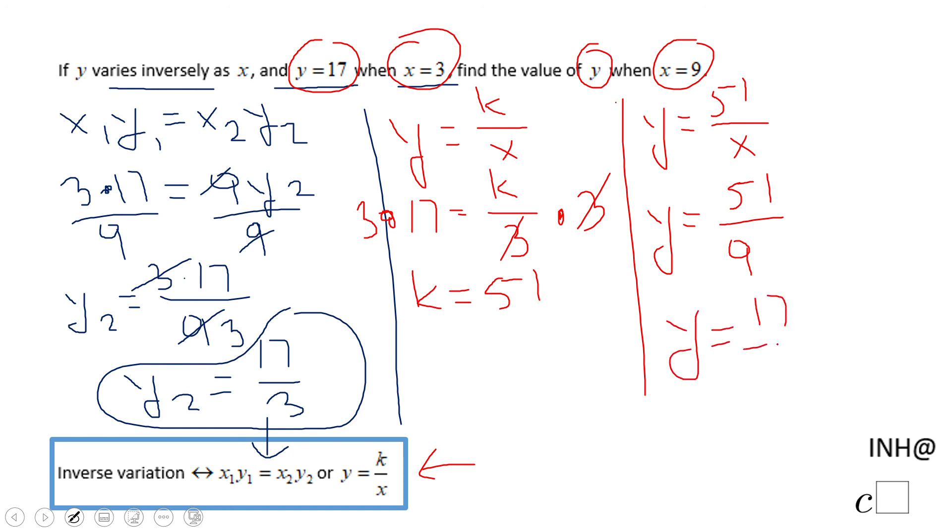which can be simplified, and we're going to have 17 over 3, like in the previous method. And that's it.